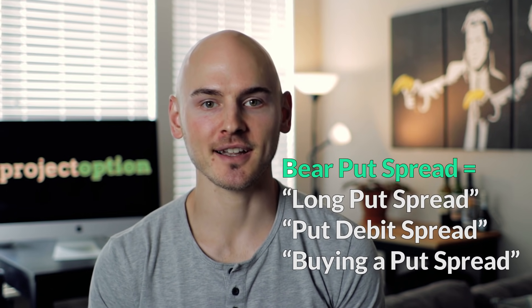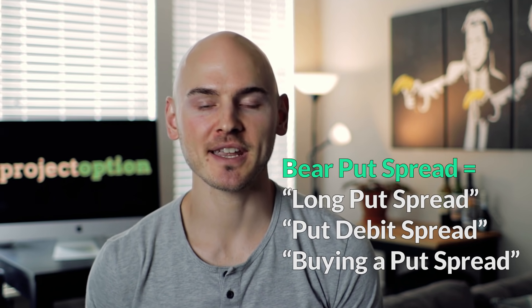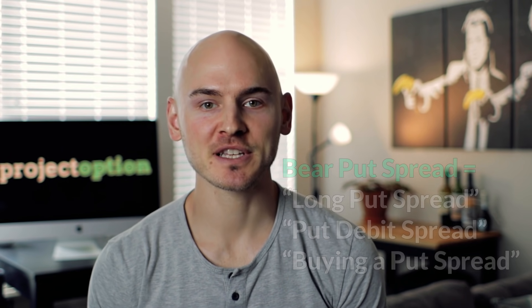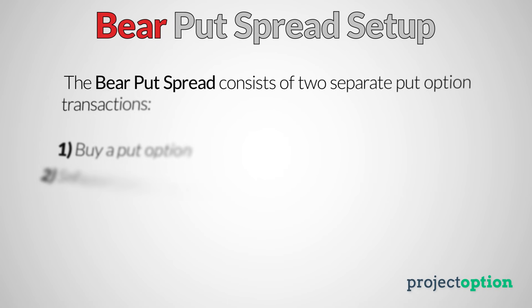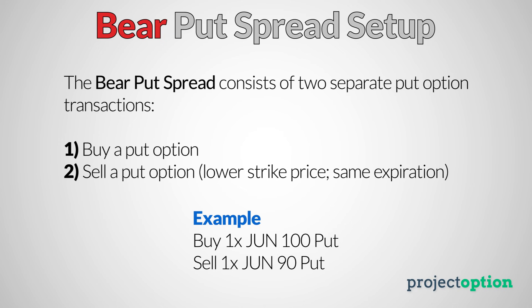The bear put spread option strategy is a bearish position that profits when the stock price decreases, but also has limited loss potential if the stock price were to increase. Other names for the bear put spread strategy include the long put spread, the put debit spread, or simply buying a put spread. The bear put spread strategy consists of two separate option transactions occurring at the same time. The first transaction is buying a put option, and the second transaction is selling a put option at a lower strike price than the option that was purchased.